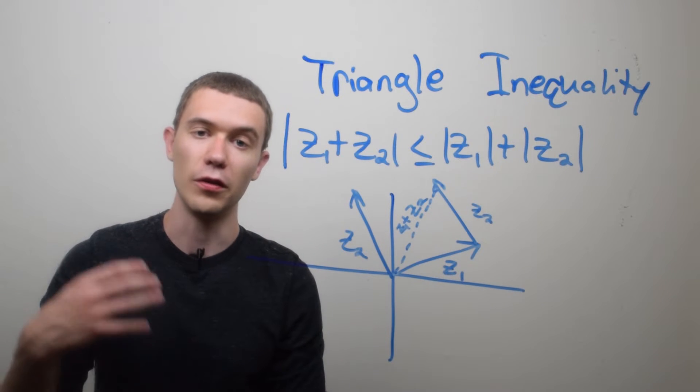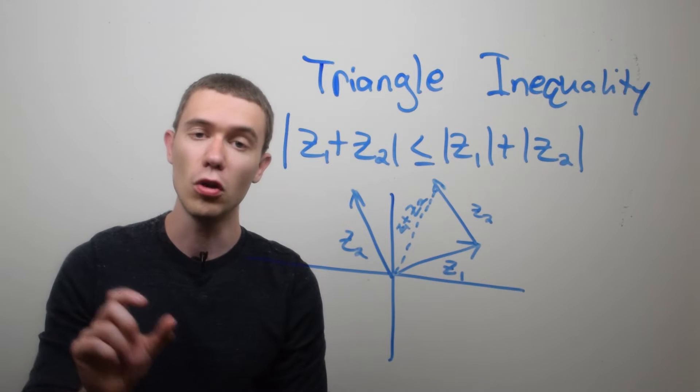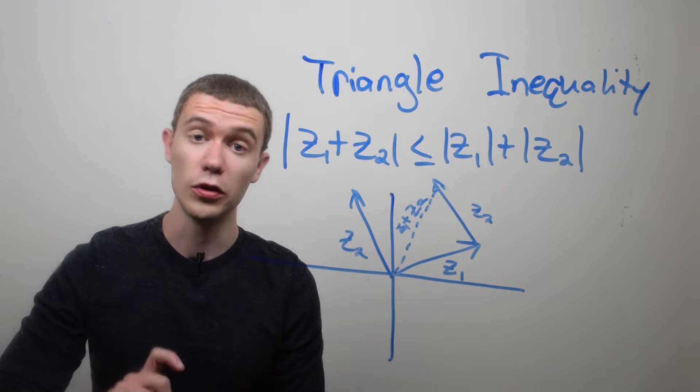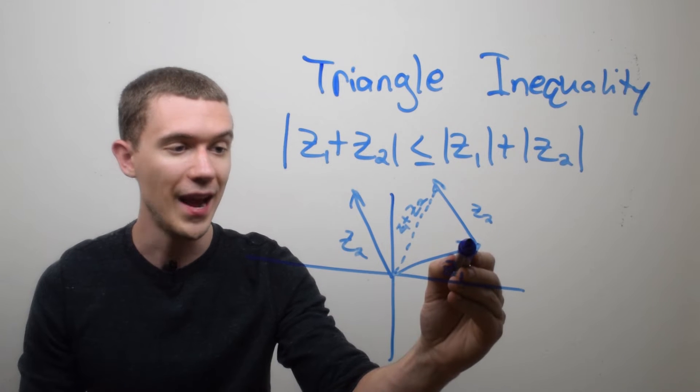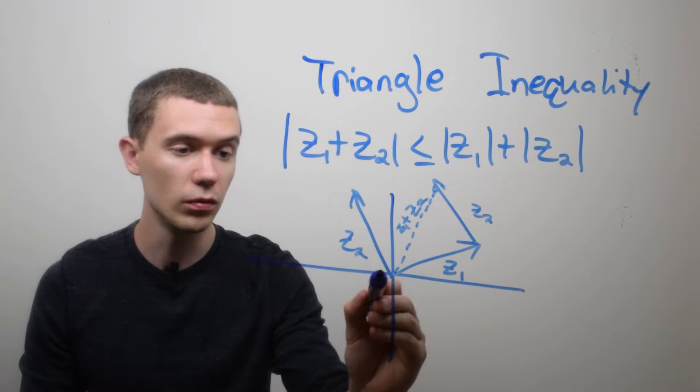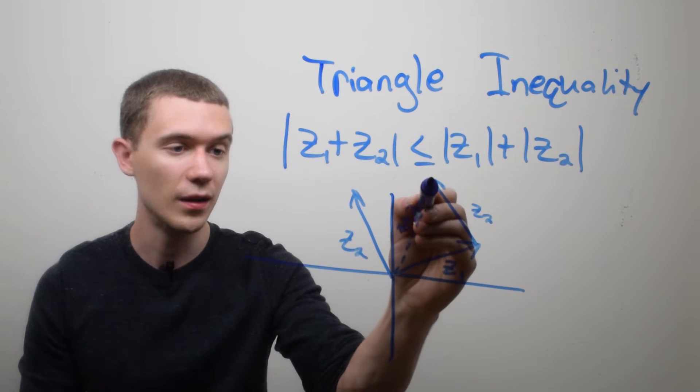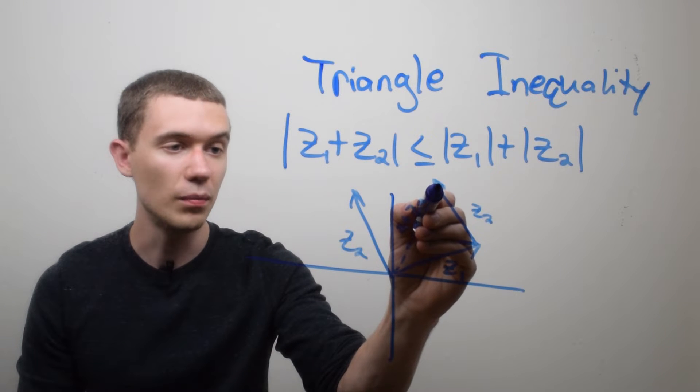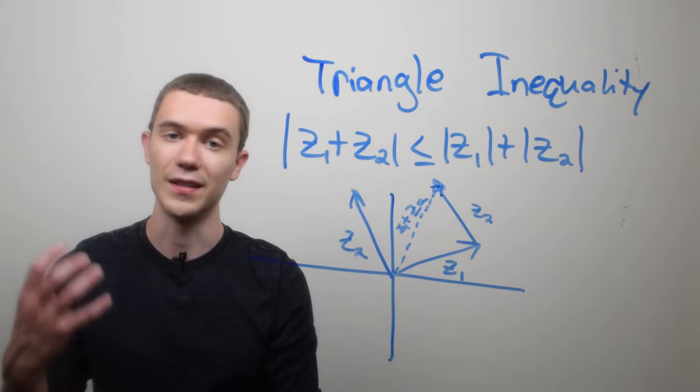Now the way vector addition works geometrically is you start drawing the second vector where the first vector left off. So if I draw z1 starting at the origin, and then I draw z2, which I've shown right here, going off of the end of z1,